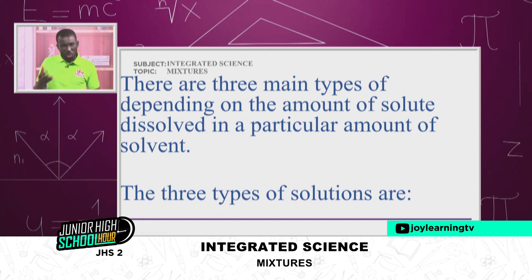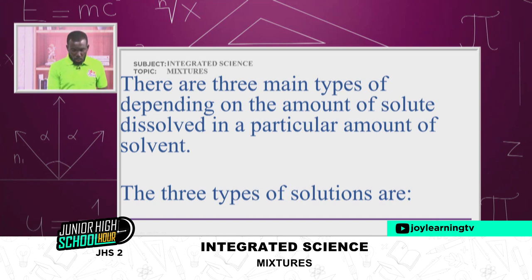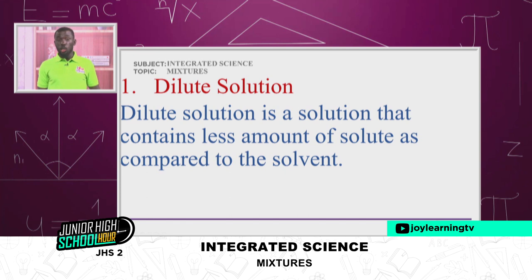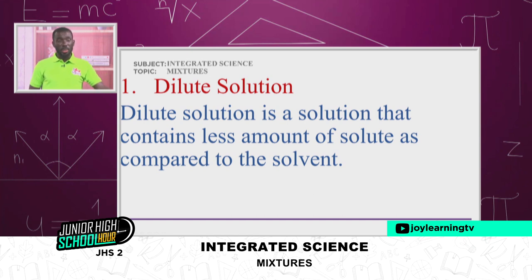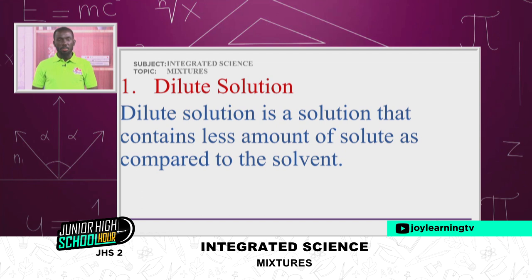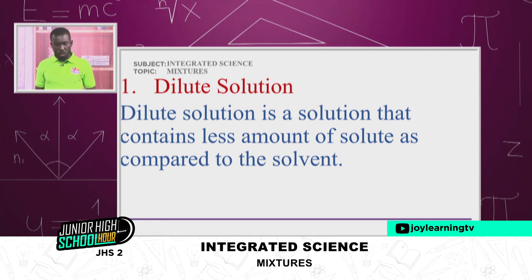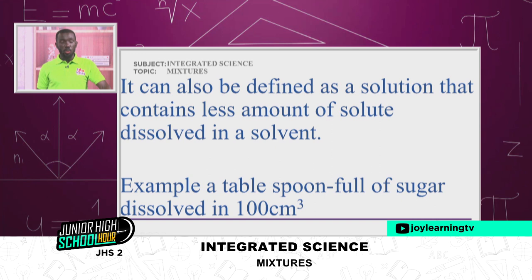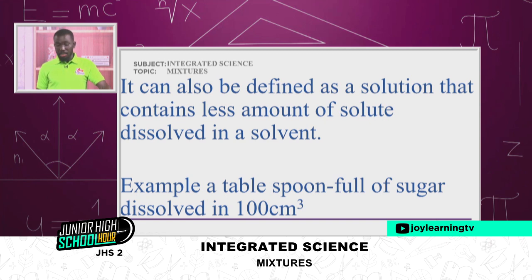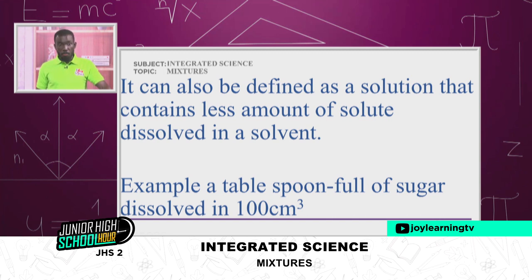There are three main types of solutions depending on the amount of solute dissolved in a particular amount of solvent. One: dilute or diluted solution. It simply means when I have a very small amount of sugar and I pour it into a larger quantity of water, then I have a dilute solution — the amount of solute is lower than the amount of solvent. Example: a tablespoonful of sugar dissolved in 100 cm³ of water.